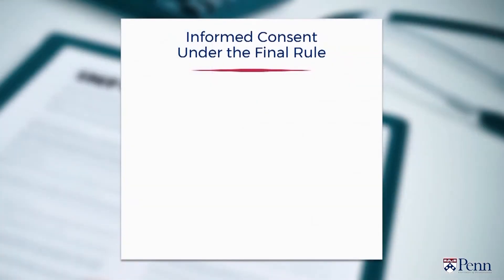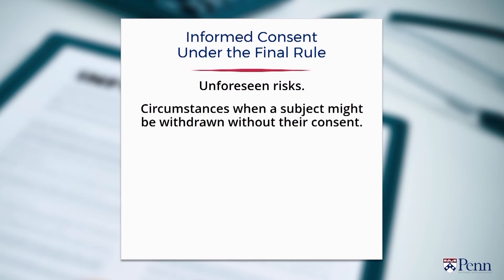There are also a number of additional elements that must be included in informed consent when appropriate to particular research studies. First, there may be some unforeseen risks in the research. Second, circumstances in which subjects may be withdrawn without their consent from the study because of dangers or other reasons. Third, subjects must be told about any costs they may incur.